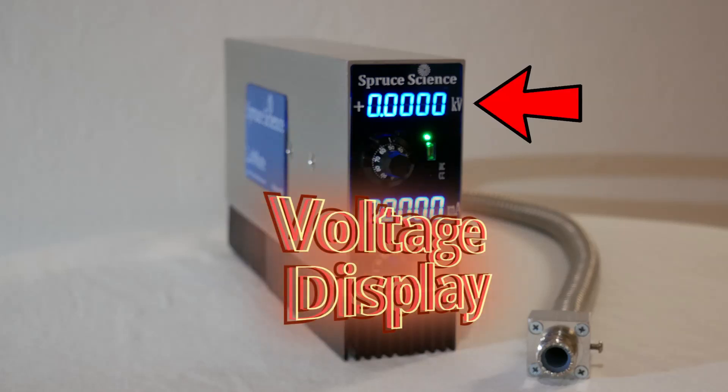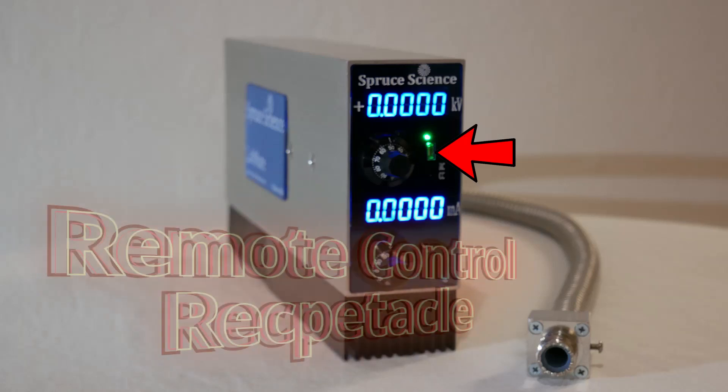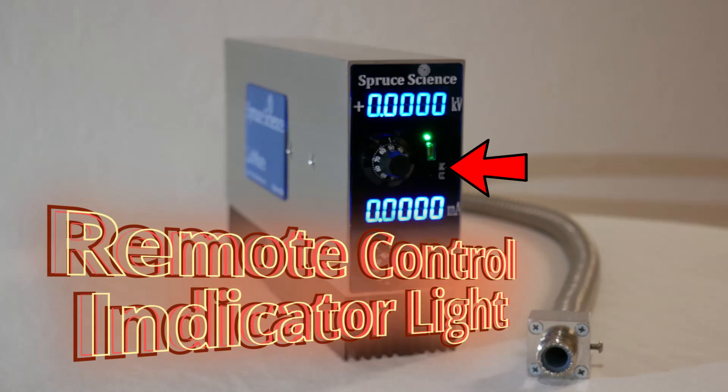Voltage displayed in 5 digits. Voltage adjustment dial with turn counting indicator. Remote control receptacle. Indicator light when the unit is under remote control.